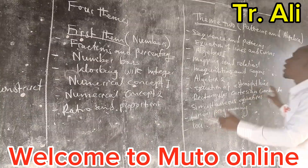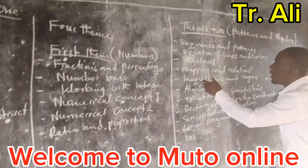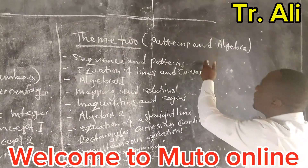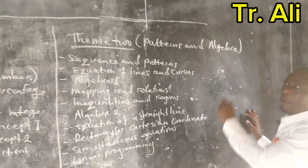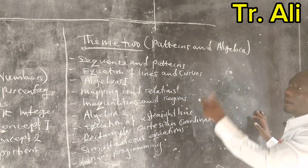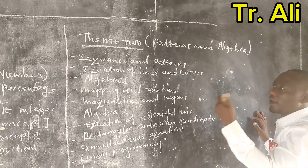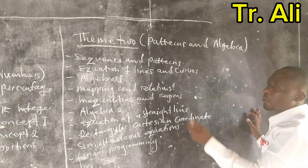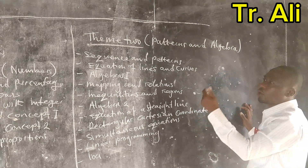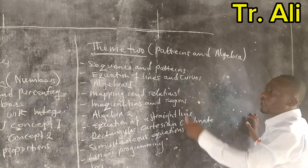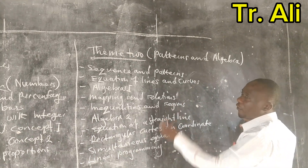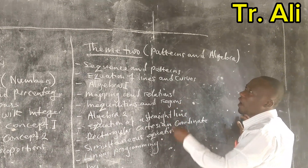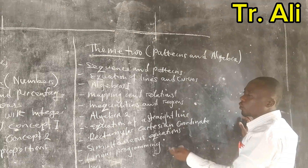Today we come to theme two, that's where we deal with patterns and algebra. Patterns and algebra has several relevant topics. This is where you expect a question — question two — from section A to come from. And these questions are all compulsory, and there are only two.